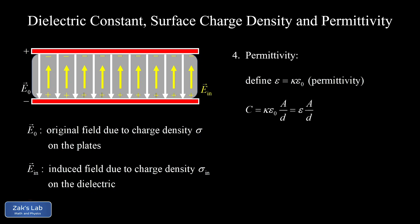Here's one example: we just saw that capacitance can be computed as kappa epsilon_0 A over d. We simply replace kappa epsilon_0 with epsilon for permittivity, producing an analogous formula to our original capacitor formula — just replacing epsilon_0 with epsilon. We can do the same thing for the electric field between the plates of this capacitor with the dielectric present.